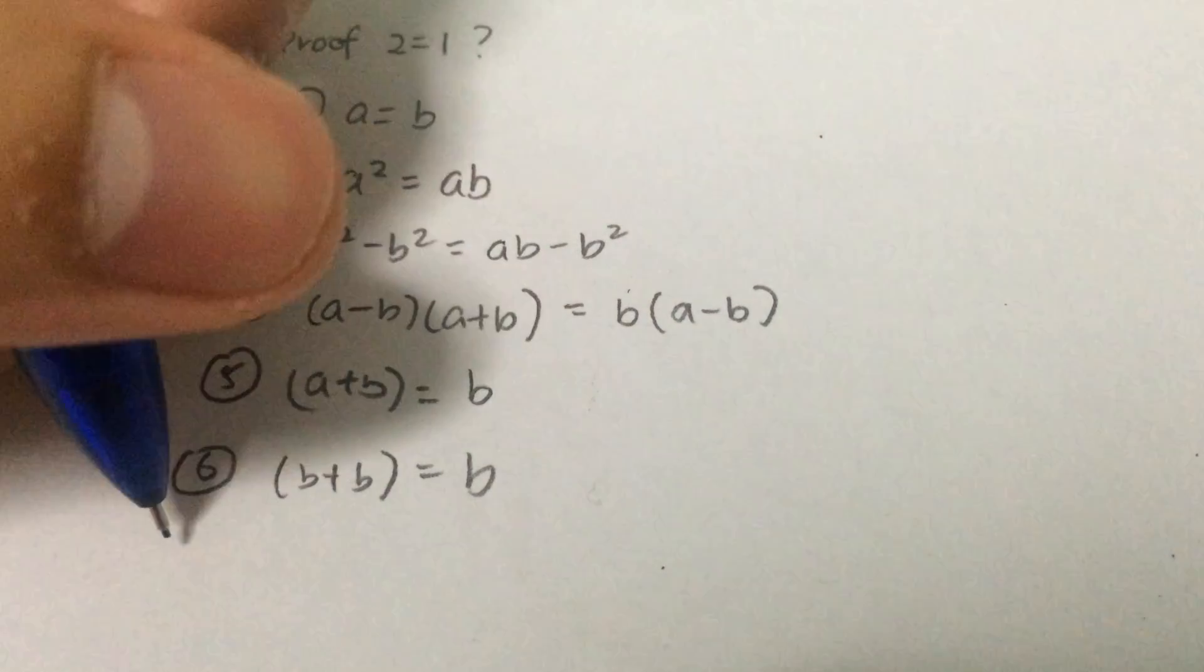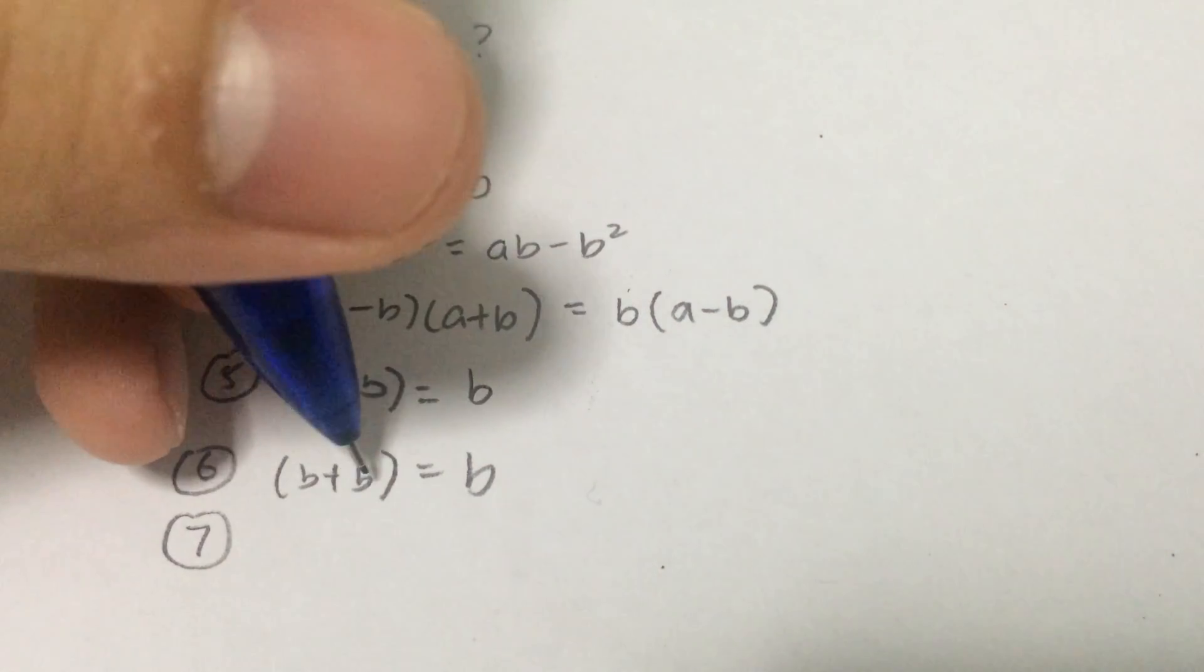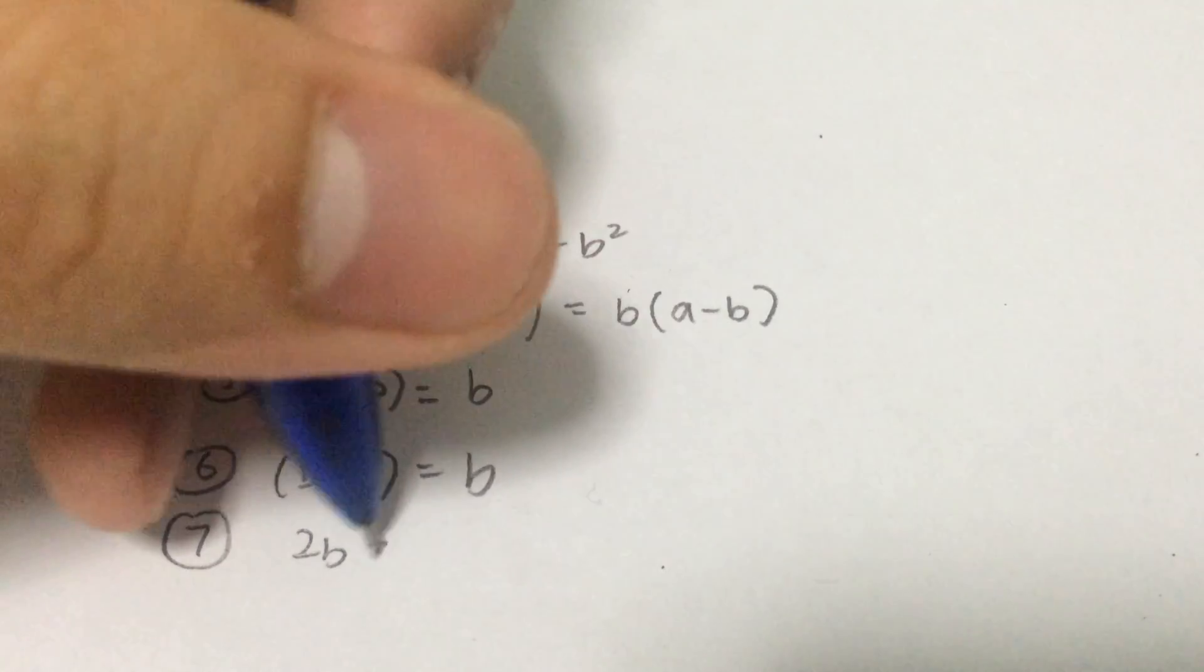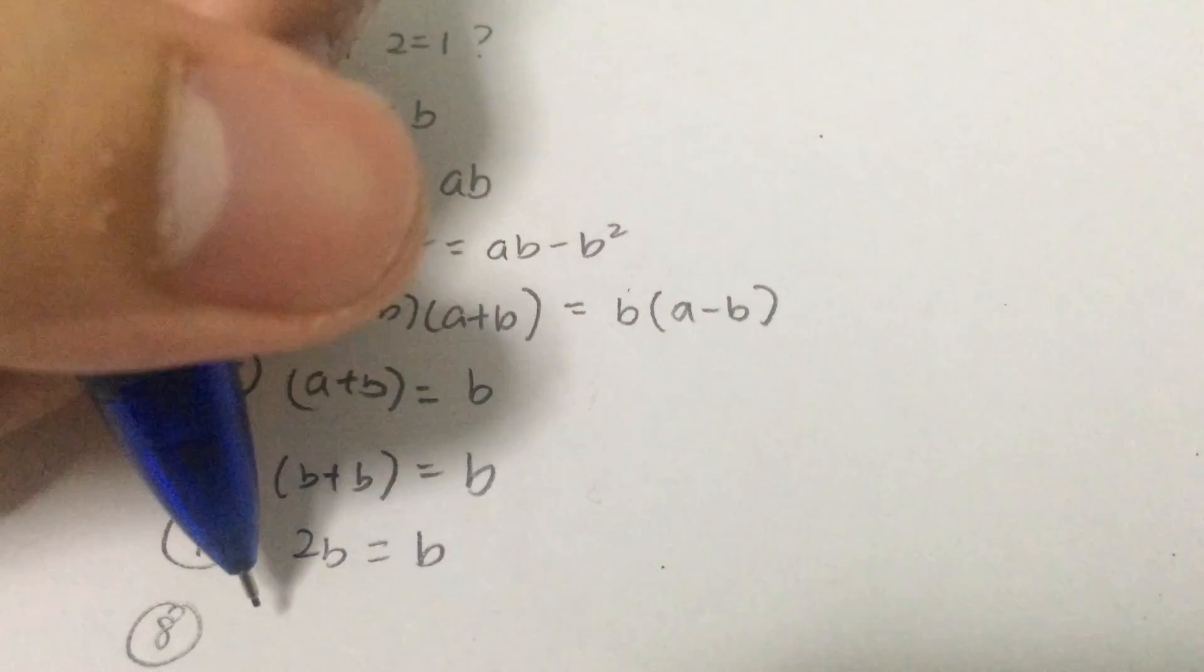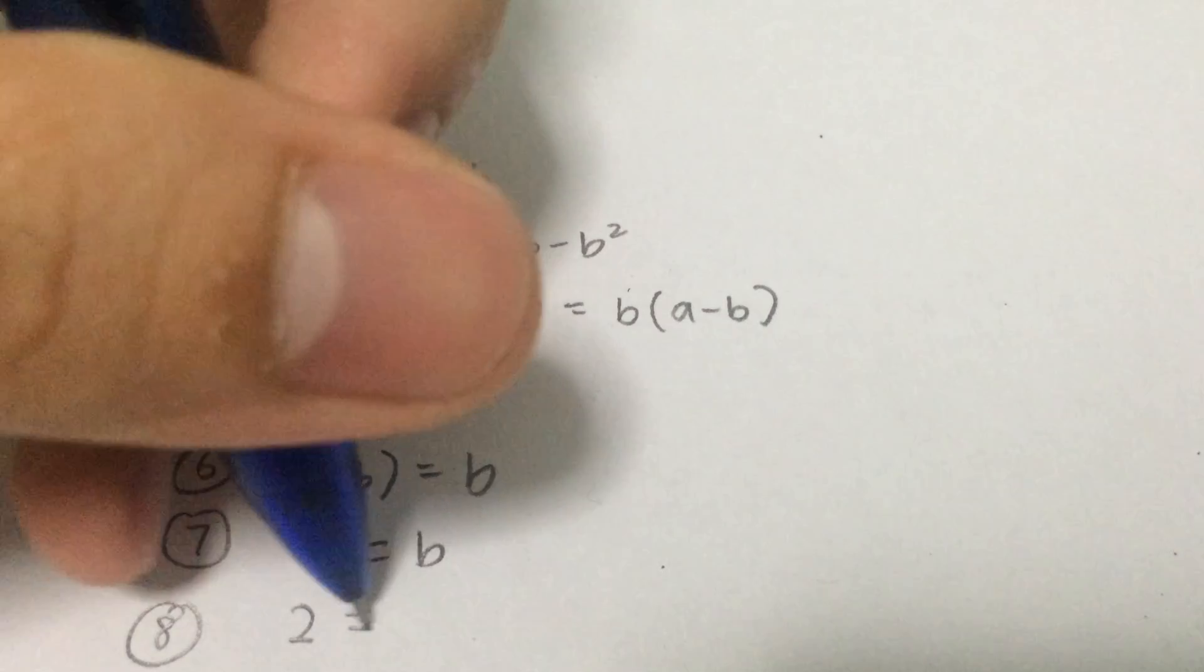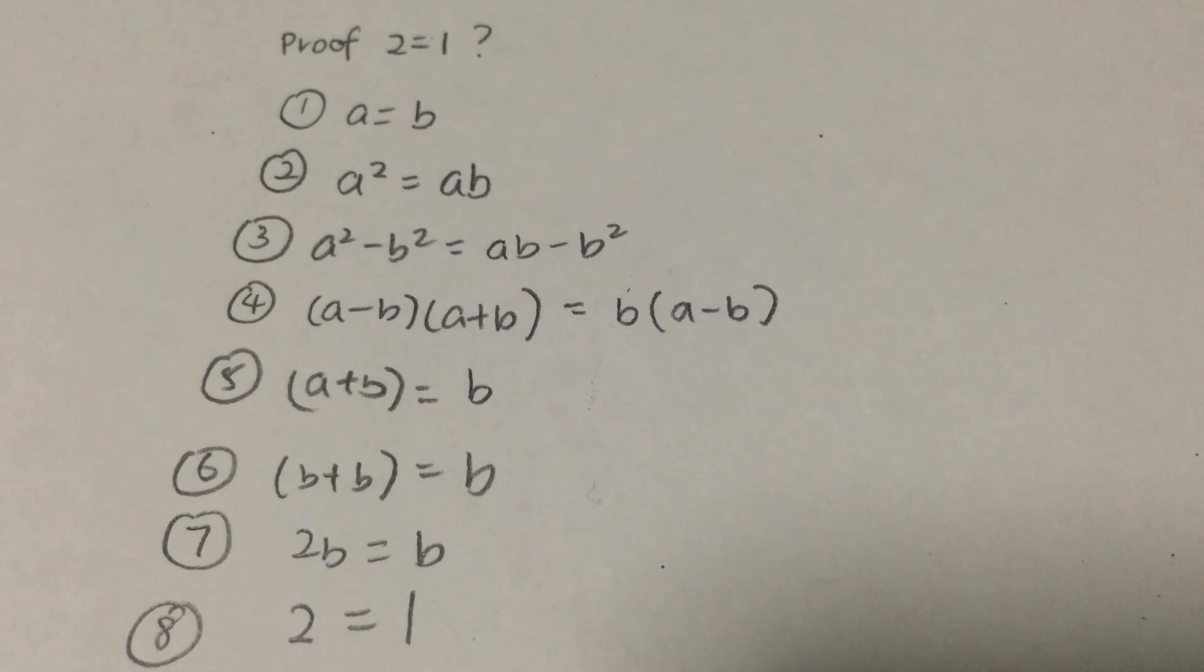Alright, so the seventh step is actually just b plus b, which is 2b, which is equals to b. And I got this very interesting proof that 2 is equals to 1. So is this the correct proof or is this a fallacy?